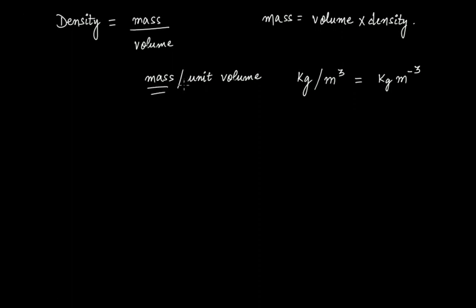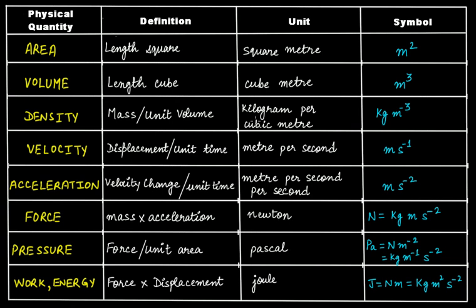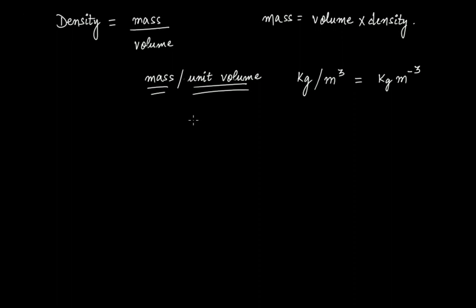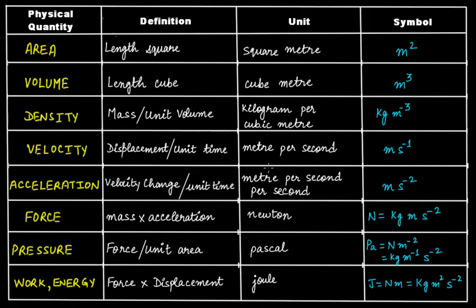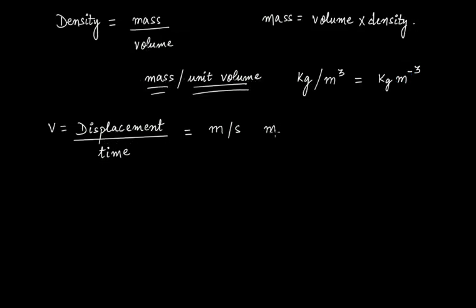When we talk about velocity, velocity is equal to displacement divided by time. Displacement is basically length, so that will be meter. And time — the SI unit of time is second. So that gives us meter per second, which we can write as m·s⁻¹ or m/s.